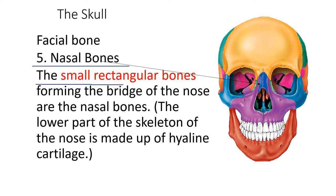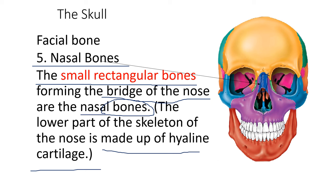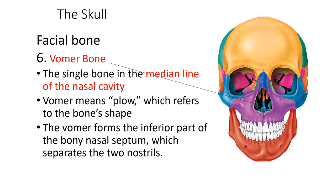The nasal bones are small rectangular bones forming the bridge of the nose. The lower part of the skeleton of the nose is made up of hyaline cartilage. Some people lack this cartilage while others have a large nose — the medium size also looks fine.